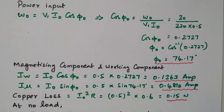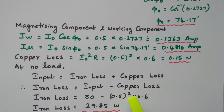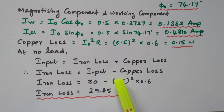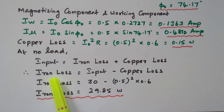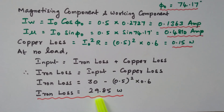Now we need to calculate the iron loss. The input is equal to iron loss plus copper loss, so iron loss equals input minus copper loss. The input is 30 watts. Copper loss is I0² × R, where I0 is 0.5 ampere and R is the resistance of the primary winding. Simplifying, we get 29.85 watts iron loss, which is 25.85 watts.